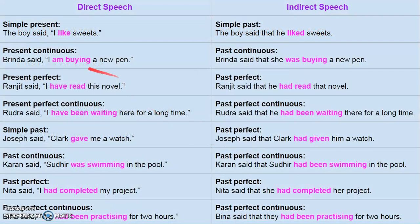All present tenses of the direct are changed into their corresponding past forms in the indirect. I have given everything in a tabular form. The first rule is: simple present is changed into simple past. For example, 'The boy said I like sweets.' Here the reporting verb is in past tense, so we have to change 'like' to 'liked,' which is the simple past form.